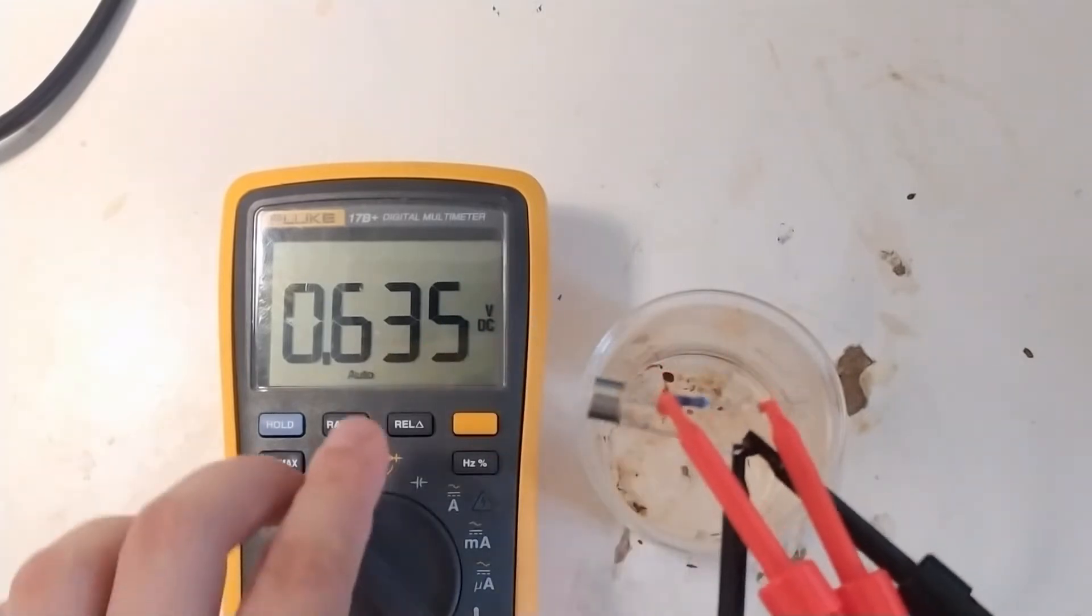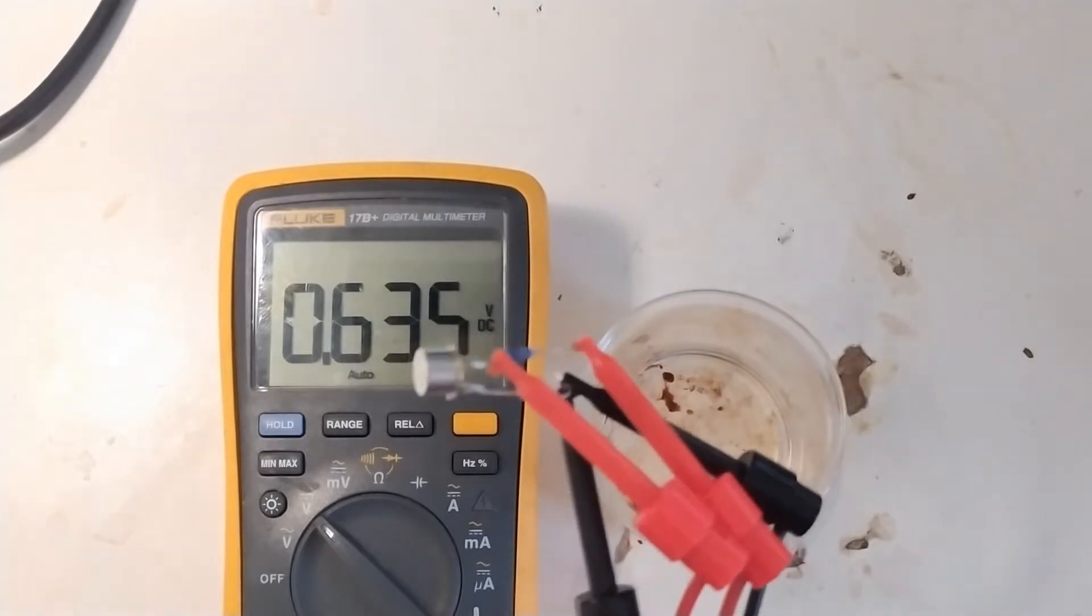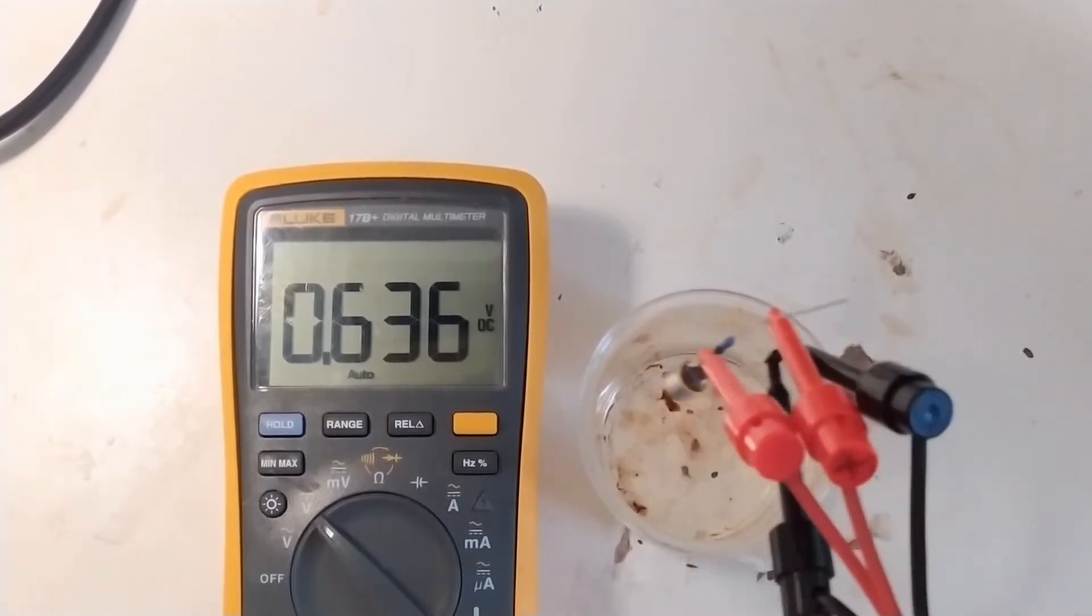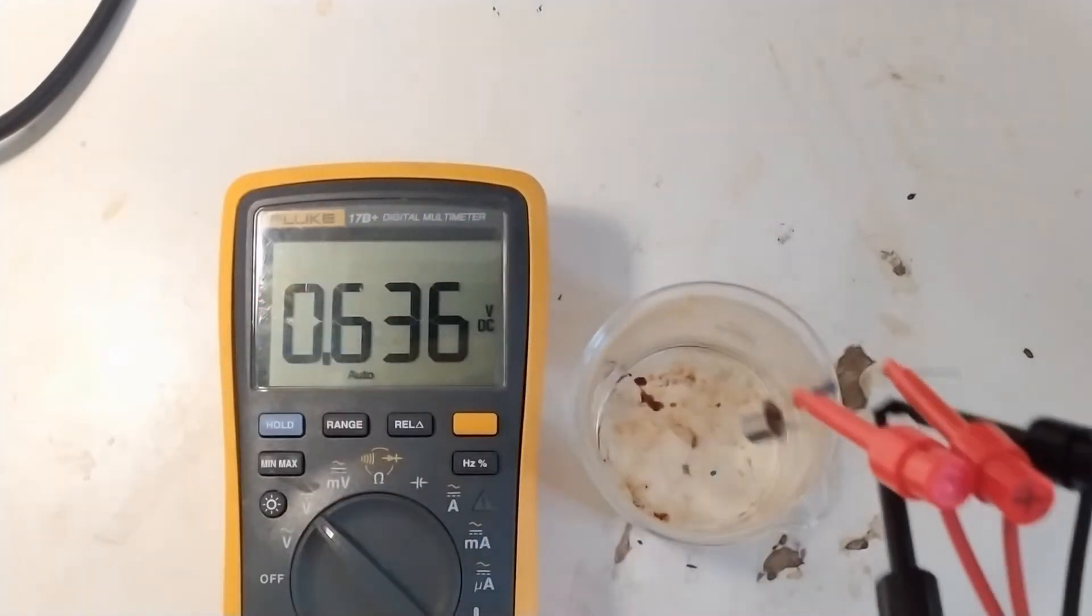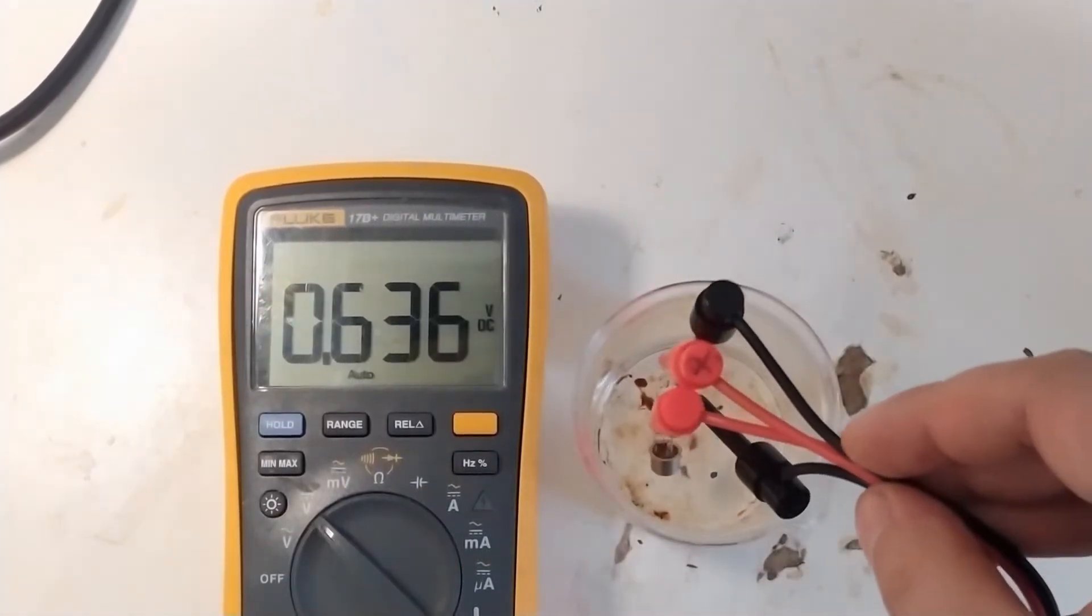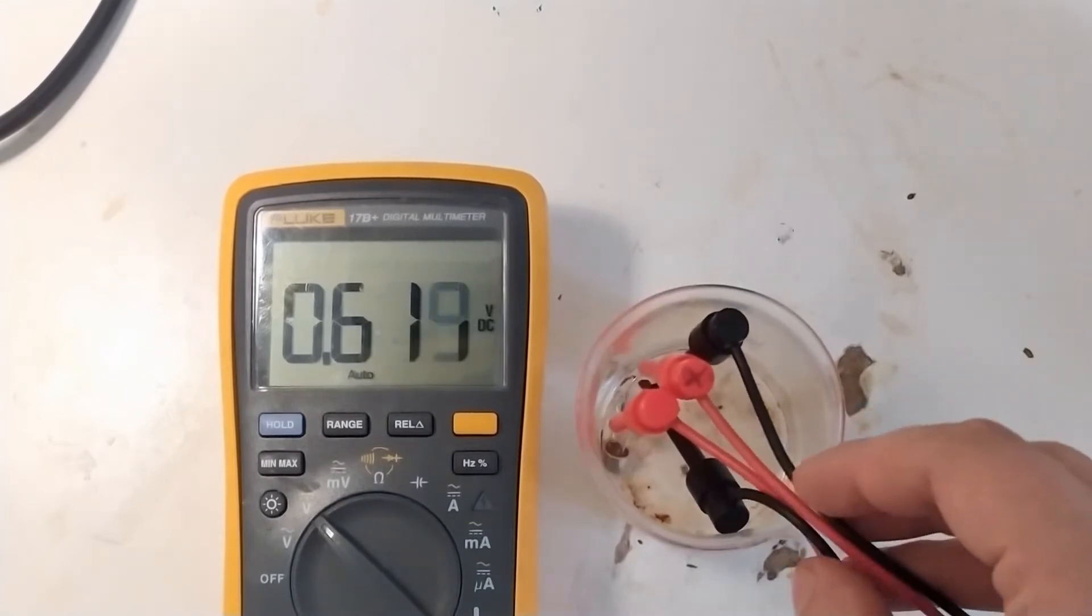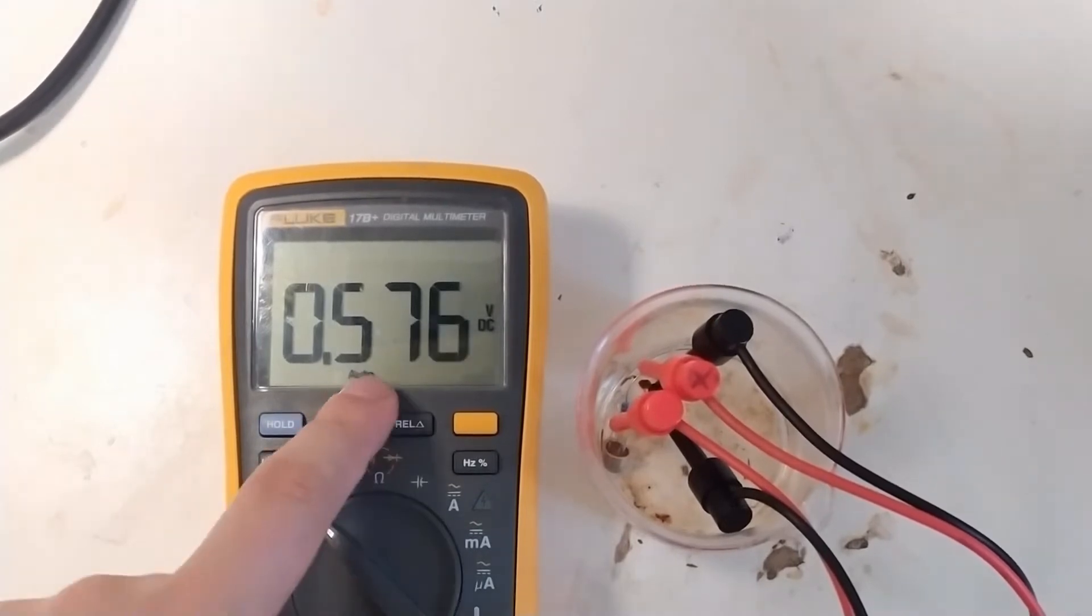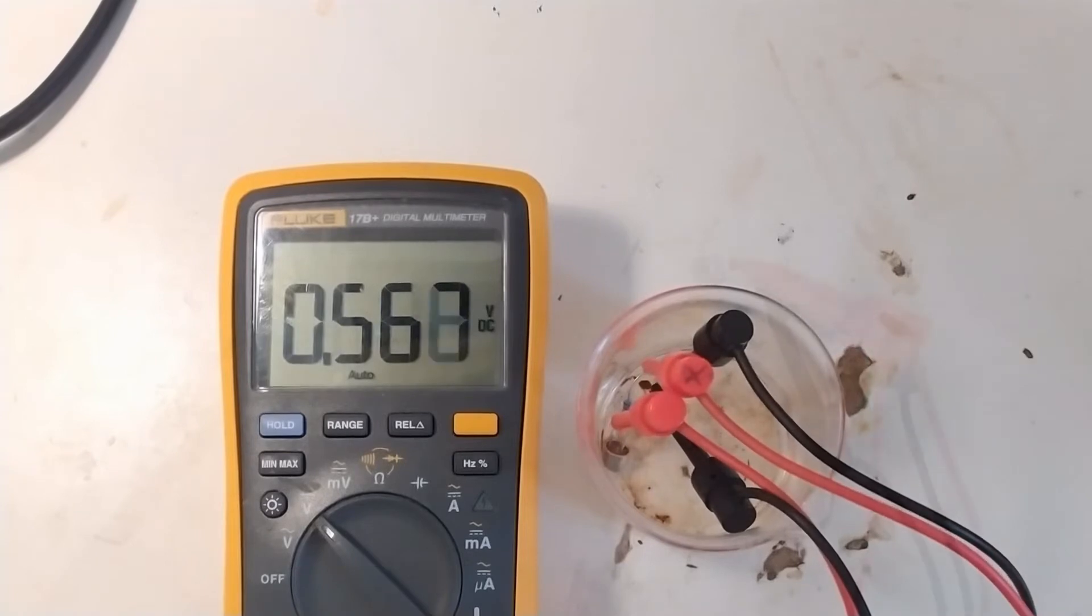So it's at 6.35 at the moment, which is fairly normal for silicon transistors, and this one in particular. Let's see what happens if I dip this into this beaker of a relatively hot, non-conductive liquid. You can see that this voltage is actually quite dependent on the temperature of the transistor. So why is this a problem?